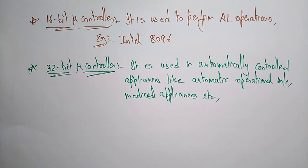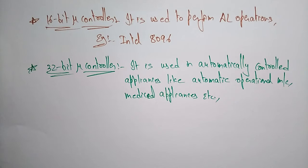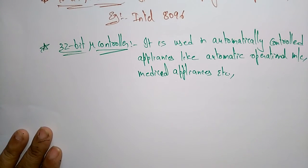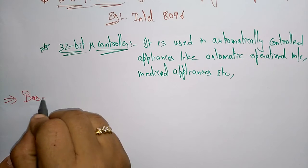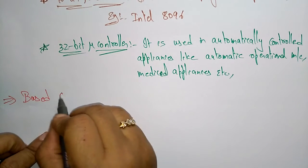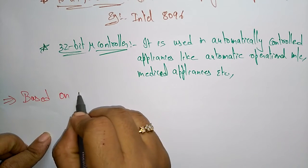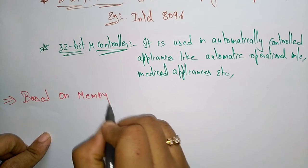So based on bit configuration, microcontrollers are divided into three categories: 8-bit, 16-bit, and 32-bit. Now let us see the types based on memory configuration.